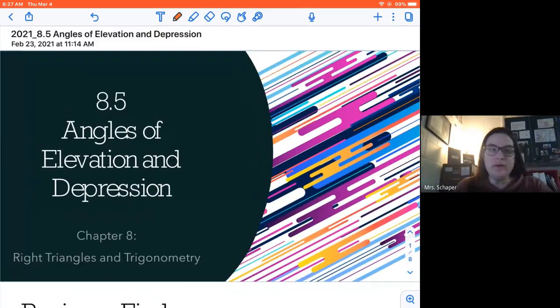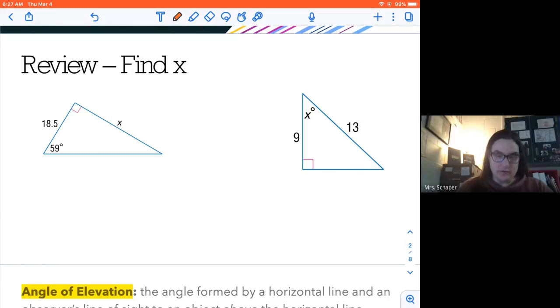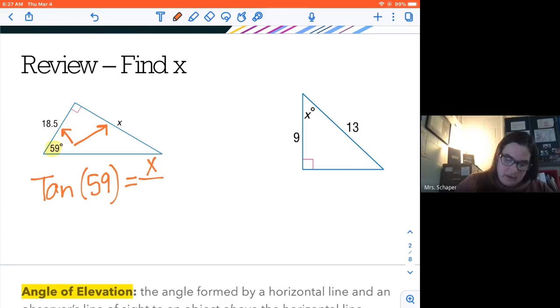All right. So let's just kind of review a little bit how to find x when we're using sine and cosine. So when my angle is 59, I have the information for the opposite and adjacent. So opposite and adjacent is tangent. So the tangent of 59 is equal to opposite over adjacent. And keeping in mind that the tangent of 59 is a number. So to solve this equation, I'm going to multiply both sides by 18.5. So 18.5 times the tangent of 59 is equal to 30.79. We're going to round to the nearest hundredth.